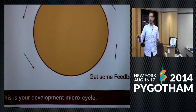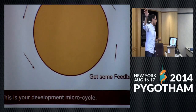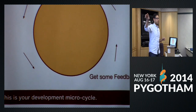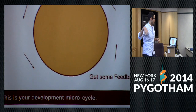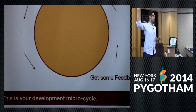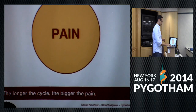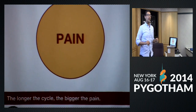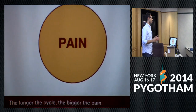This is your development microcycle. You make some sort of change in your code — you write a line, install a package — and then you think it does something. Sometimes it does what you thought; sometimes it does not. You need to get feedback on the change you made so you can make another change. This is how software gets written. The problem is that this circle is filled with pain, and the bigger the circle is, the more pain you will go through to write software.